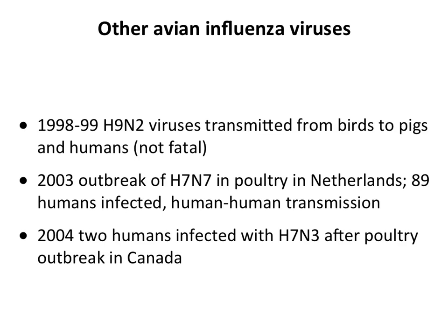Here are other avian influenza strains that have infected people. H9N2 infected pigs and humans in 1998 — not fatal but documented. In 2003, an outbreak of H7N7 in poultry in the Netherlands resulted in 89 humans infected with documented human-to-human transmission. In 2004, two people were infected with H7N3 after an outbreak in Canada. There are other viruses out there, and if we're going to do surveillance we have to look at all of them.